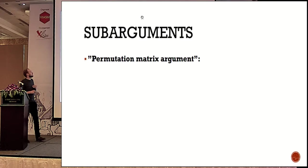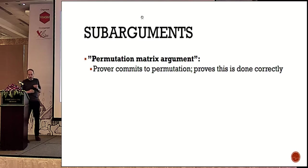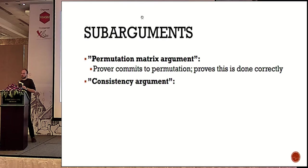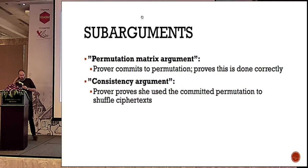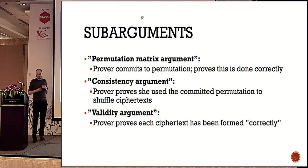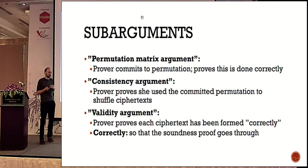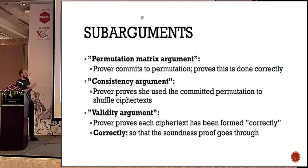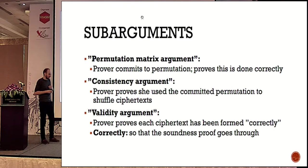Our sub-argument structure is as follows. We start with a permutation matrix argument, where the prover commits to some permutation and proves that he committed correctly. Then comes a consistency argument, where the prover proves that he used the same permutation as committed to shuffle the ciphertexts, and finally a validity argument where the prover gives proof that the ciphertexts are formed correctly.